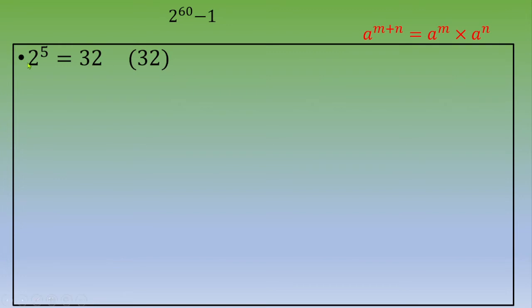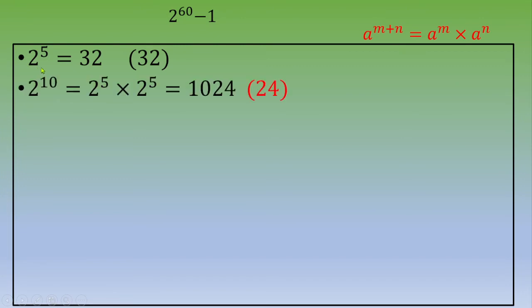Next step: calculate 2 power 10. This is 2 power 5 times 2 power 5, which equals 1024. So the last two digits of 2 power 10 are 24.